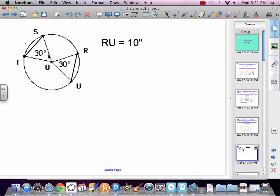Here we have two central angles, both 30 degrees. We have two chords, ST and RU. If RU is 10, ST is congruent. It's 10. Because they're the same angle.